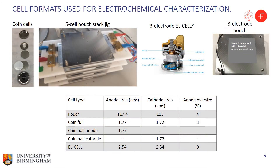We designed four types of cells. This figure shows the configuration for the coin cell, and this one shows the pouch cell jig. The pouch cells are compressed between two brass blocks to decrease contact resistance. The next figure shows the three-electrode coin cells, and this one is for the three-electrode pouch cells. This table shows the active area for the electrodes.